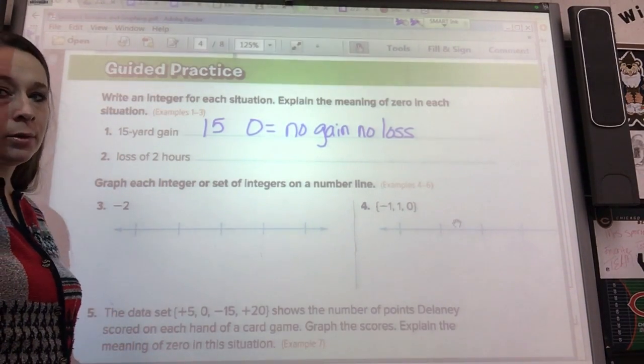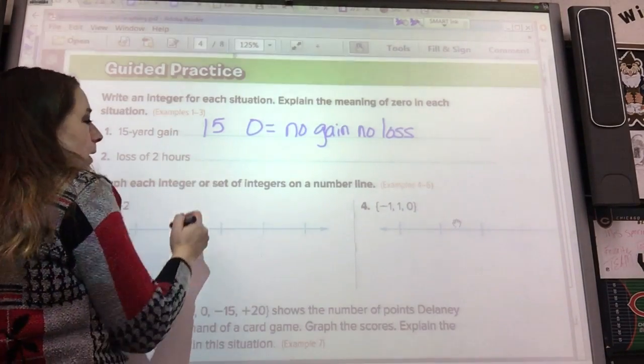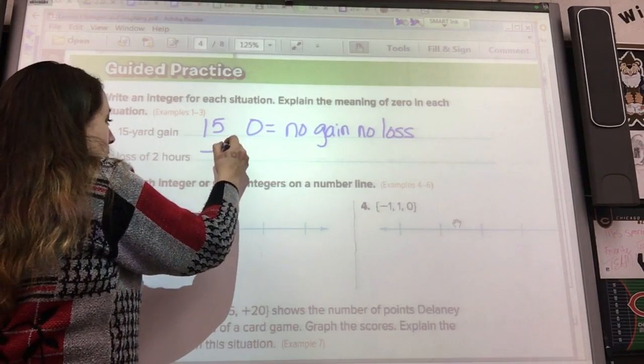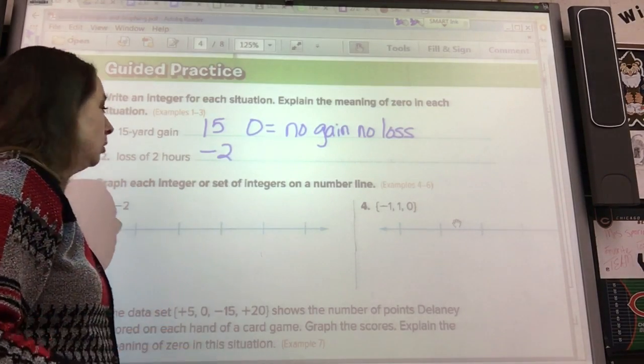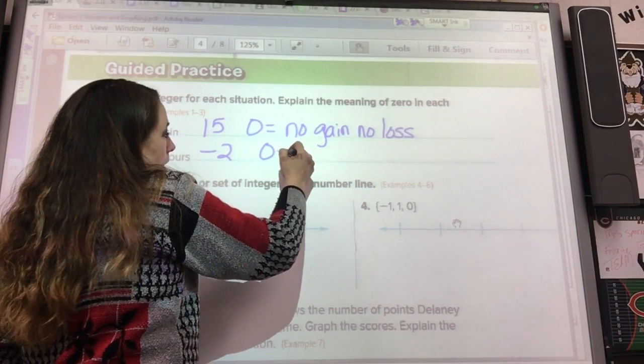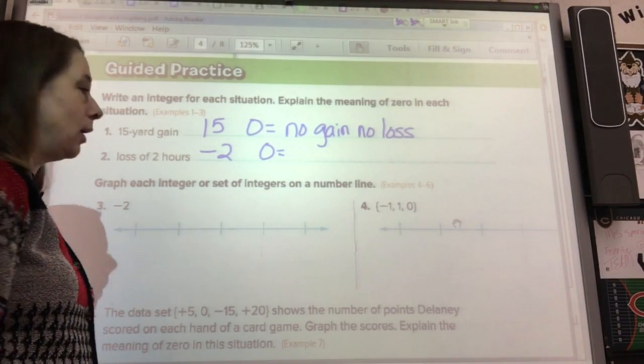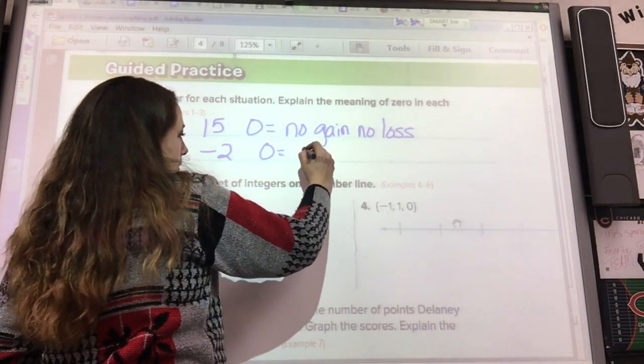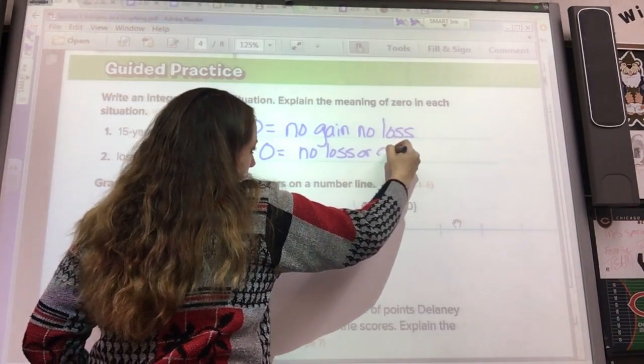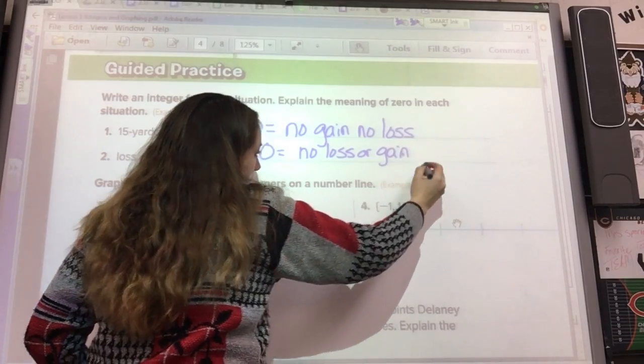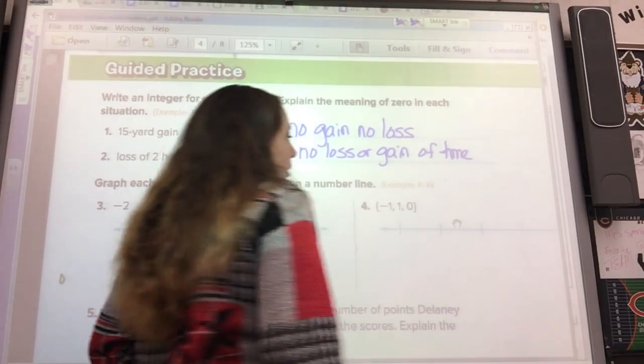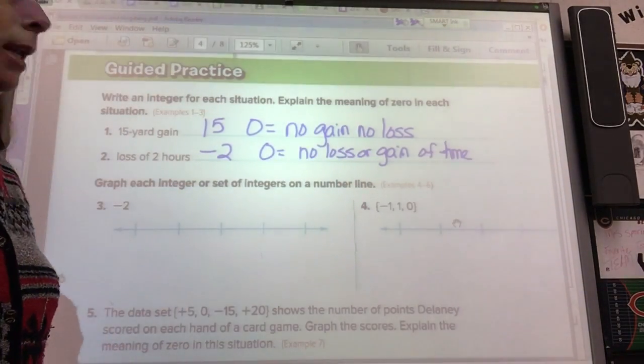A loss of two hours. A loss of two hours, that would be negative because we lost it. It's gone. A loss of two hours, zero means we didn't lose or gain an hour. So zero means no loss or gain of time.